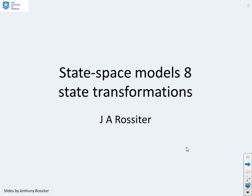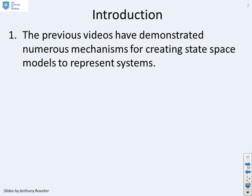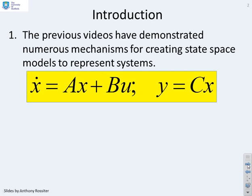This video looks at state transformations. Previous videos have demonstrated numerous mechanisms for creating state-space models to represent systems. Here's a typical state-space model. People tend to use the parameters A and B and write x dot equals Ax plus Bu, and the output is defined as a matrix C times the state x.